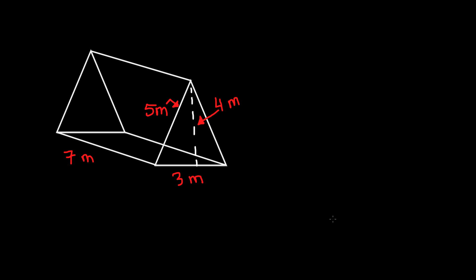In a triangular prism, obviously there are two triangles — one up here and then one in the back — and then we have two rectangles that are on the sides, and then the base, which is also a rectangle. In this particular triangular prism, the triangles are obviously the same. They both have the same area, and these two rectangles on the sides also have the same area, but the one on the bottom has a different area. So we're going to find the area of all of these and then add them together to find the surface area.